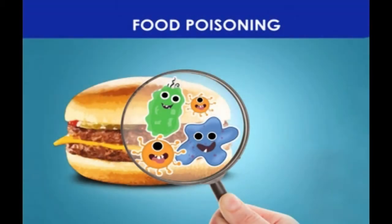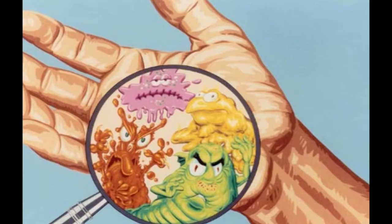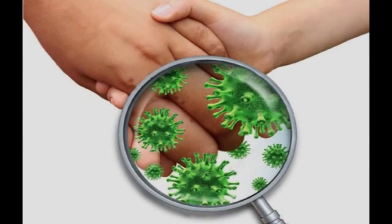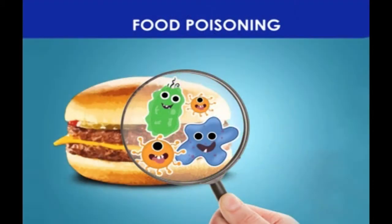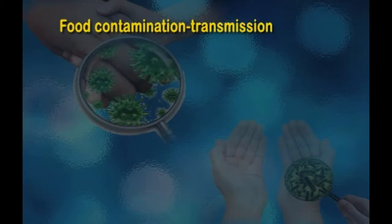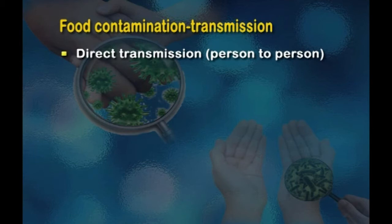Sometimes microorganisms do spread to the food we eat. There are different routes for the spread of microorganisms — it can occur through air, through water, or sometimes direct transmission, that is person to person. If a food handler has not washed his hands adequately, the microorganisms can pass from his hand onto cutting surfaces, then onto food, and then the person who eats the food gets the infection — this is known as direct transmission.